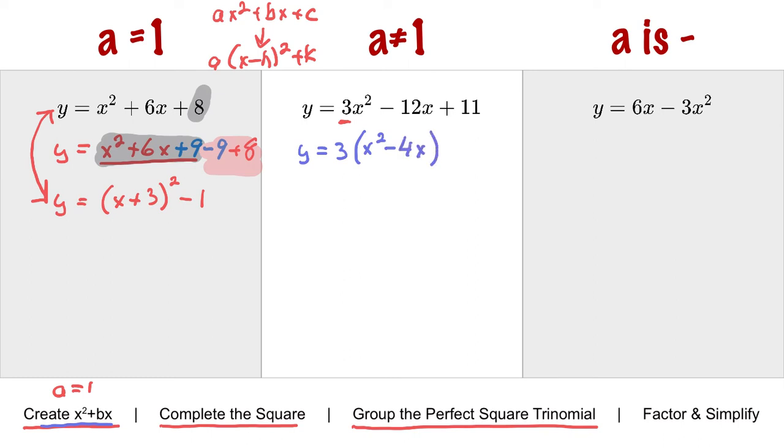The common factor of 3x squared minus 12x is actually 3x. But we don't need to take all of it out. We just need to create the situation where it is x squared plus bx, because that will allow us to complete the square. Now I'm going to bring down my 11.